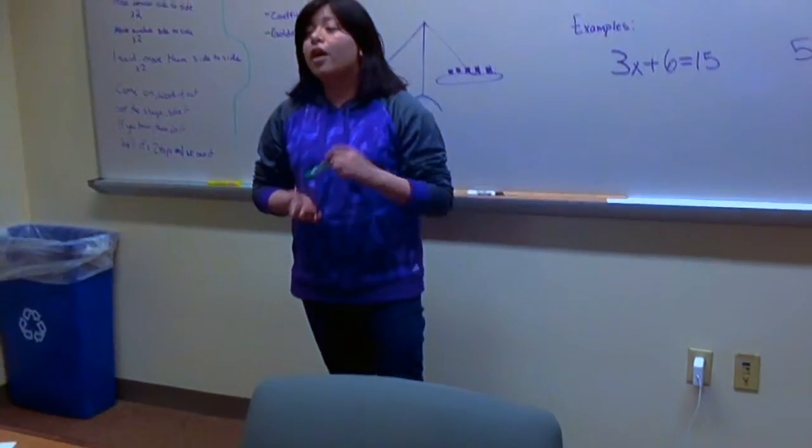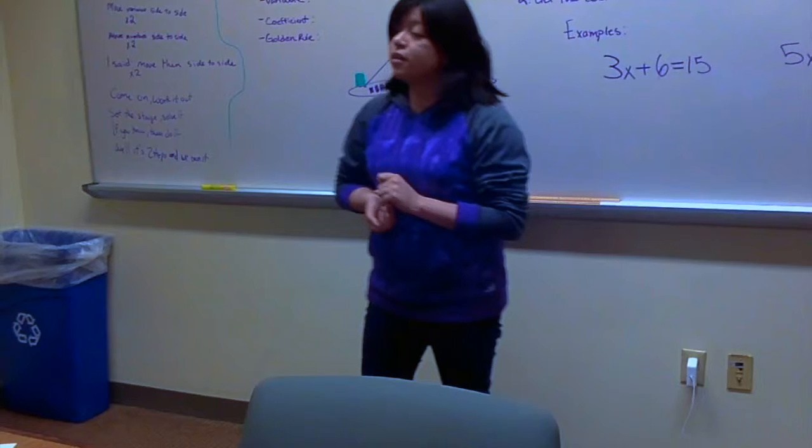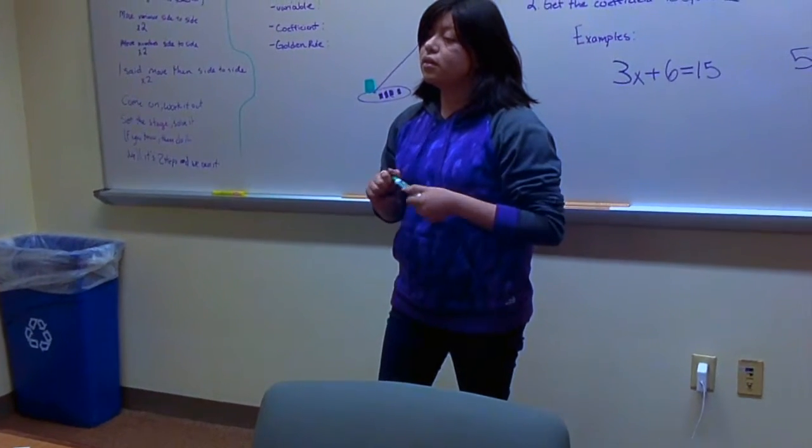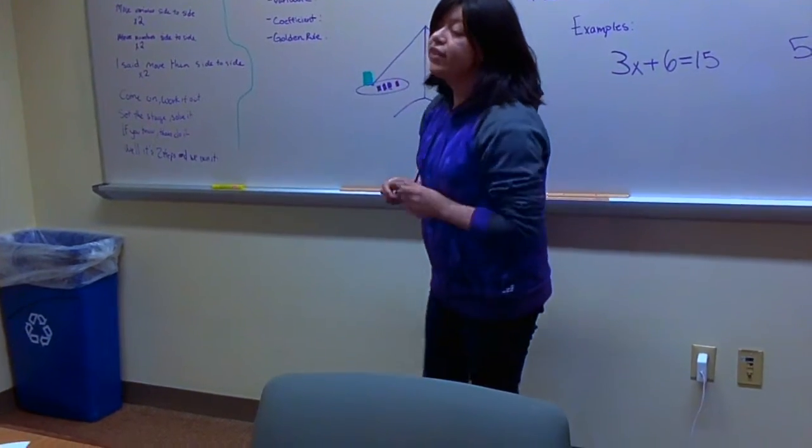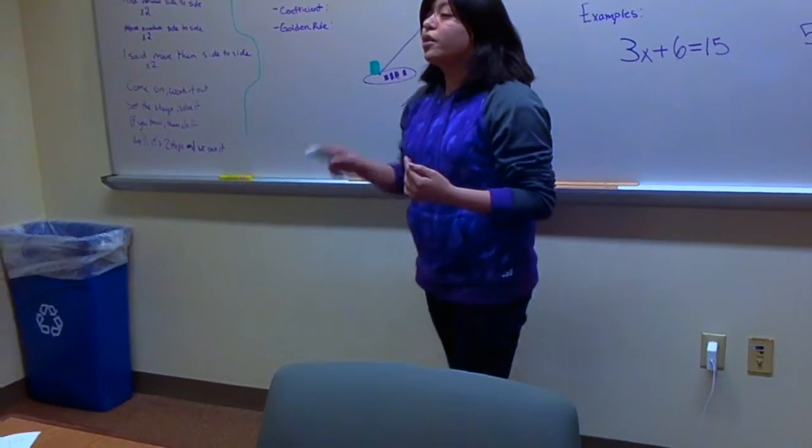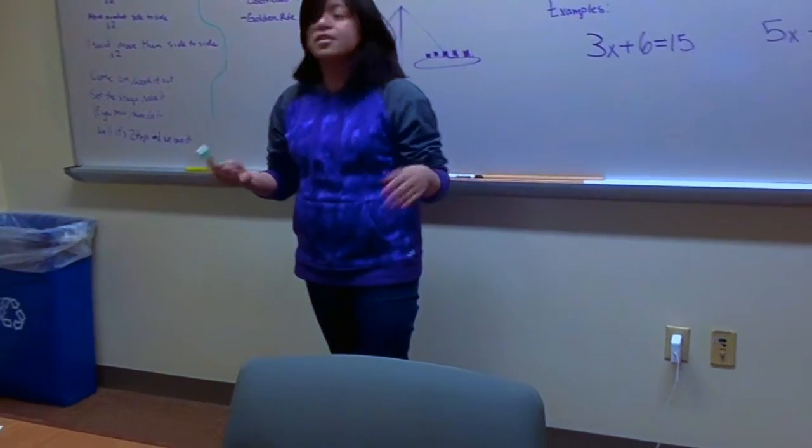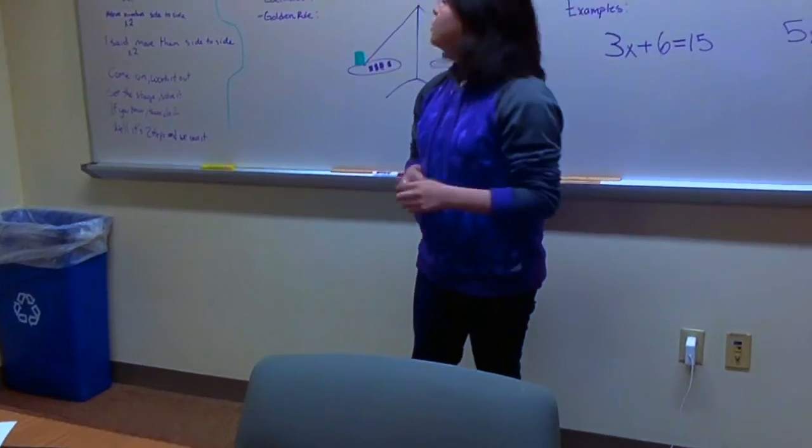Alright. Coefficient. James, can you tell me what a coefficient is? Is it like the x? No, that is a variable. So, the coefficient is what goes in front of the x. So, let's say we have 3x. The three is the coefficient.